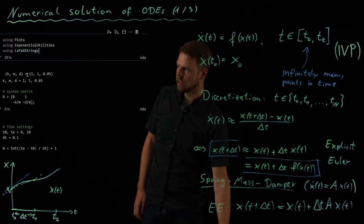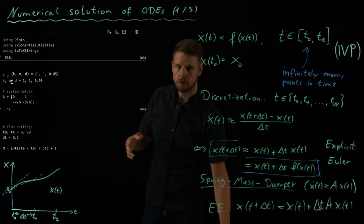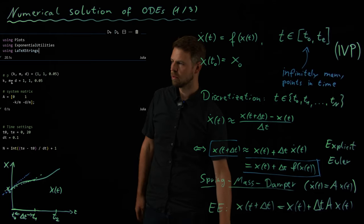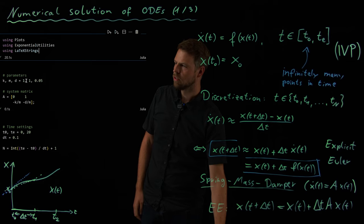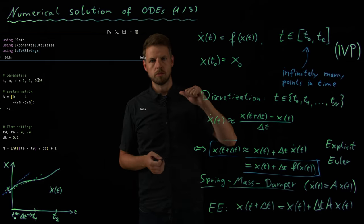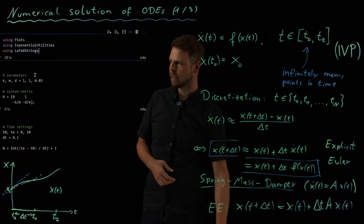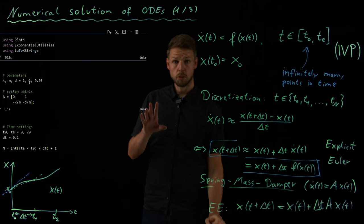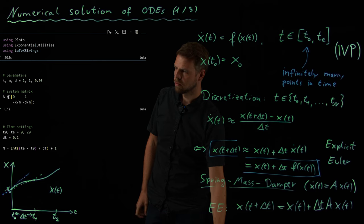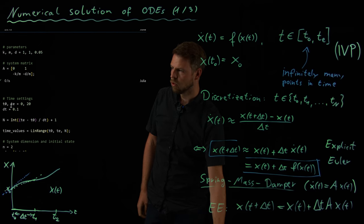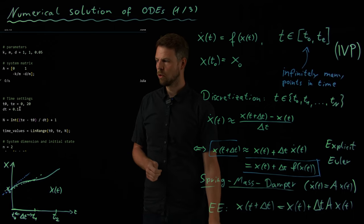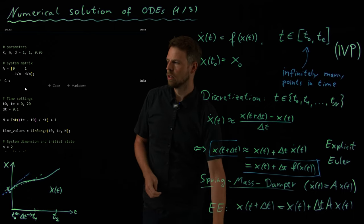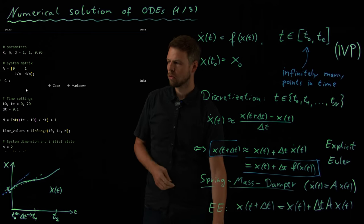Okay, so I have here the parameters of my spring mass damper system. So k is the spring constant, m is the mass of the mass that is oscillating, and d is the damping constant. So you see we have unit stiffness, unit mass, and a small damping term. So it's a rather slow decay. This gives us, as we have seen in previous videos, this system matrix A. And what I'm going to do now is I'm going to look at the time interval 0 to 20 seconds with a time step of 0.1. Okay, so this gives me 201 time steps that I'm going to simulate over.